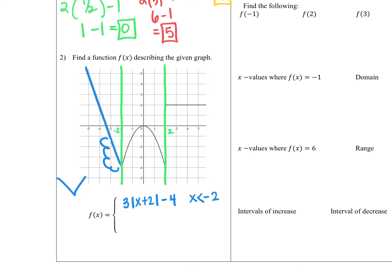We can include the equal-to at negative two here since there's no hole, and then we won't include it in the next function. The next piece looks like a parabola — a beautiful parabola with no stretch, but flipped upside down. So it's negative x squared, still at the origin, reflected. It's restricted between negative two and two. I'll leave the first boundary without the equal-to since we already included it above, and include two on the right side.